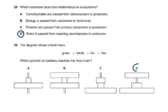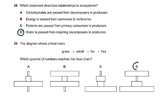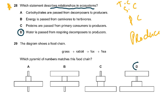Question 28 asks which statement describes relationships in ecosystems — noted as a difficult question in the exam report. Carbohydrates passed from decomposers to producers — no, carbohydrates are respired. Energy passed from carnivore to herbivore — wrong direction in the food chain. Primary consumer to producer — also the wrong way around. The food chain goes: producers → primary consumers → secondary consumers → tertiary consumers → quaternary consumers. The only correct answer is: water is passed from respiring decomposers to producers, because decomposers provide material to producers via the soil.